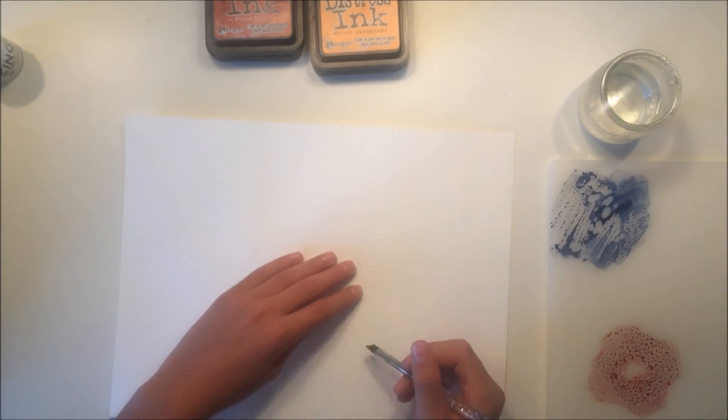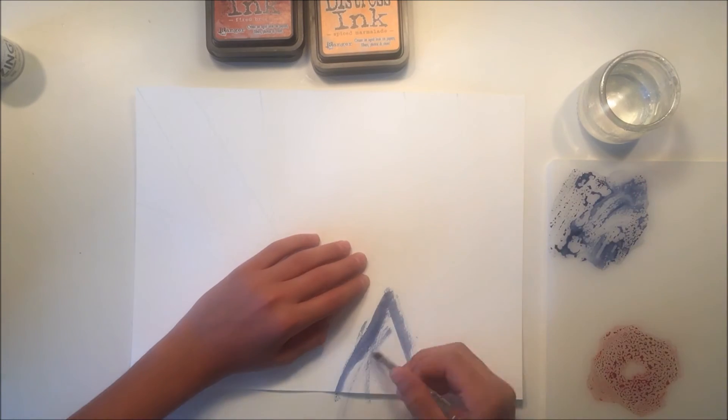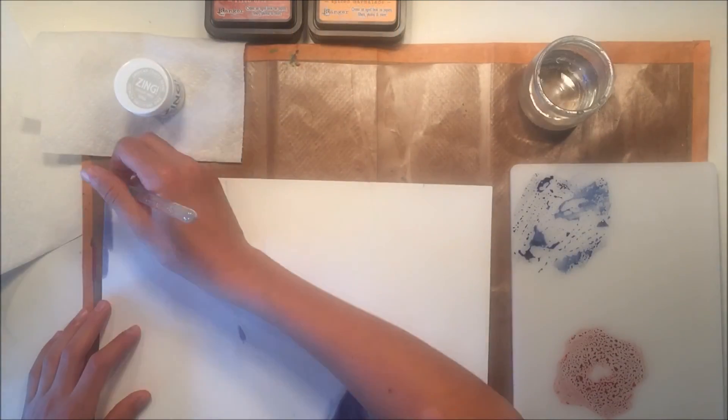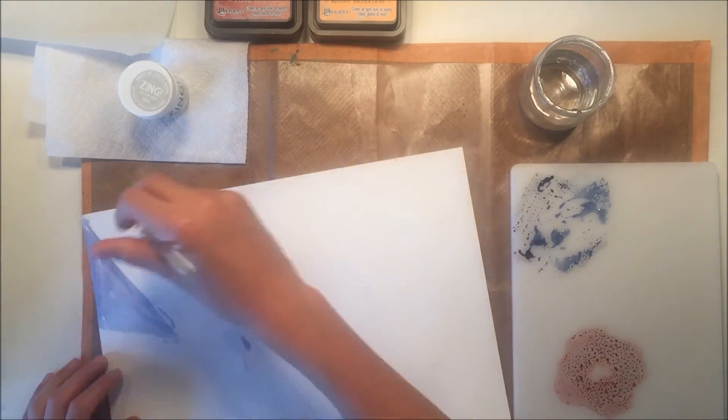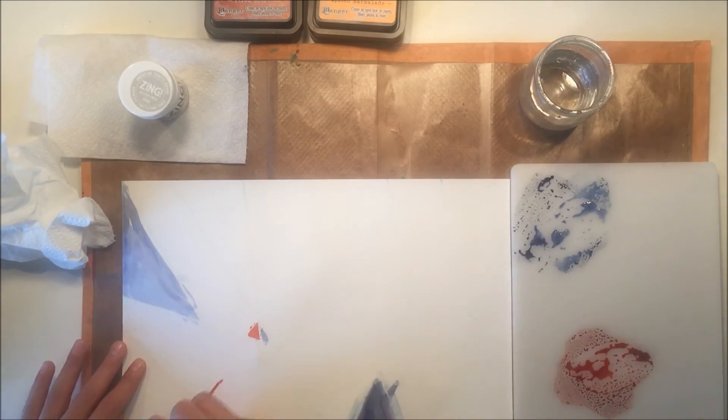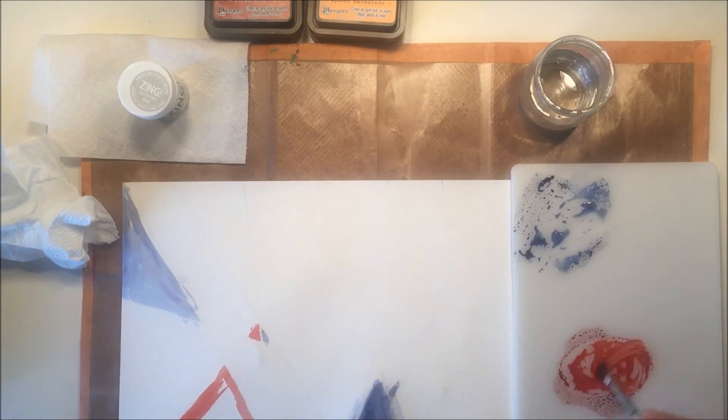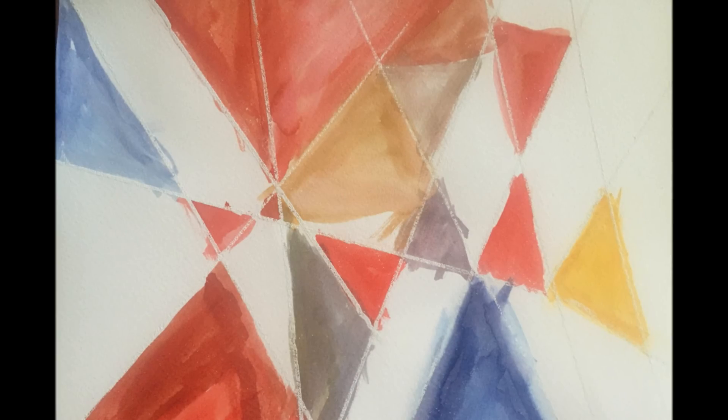He starts out with the blue and kind of gets a little bit messy with it. The embossing powder will prevent the watercolor from seeping into other sections of the page, but he just went right over it with his paintbrush. Then he ended up going to get a craft mat to work on because he was working directly on my table. That's why he ended up being off camera for these next shots.